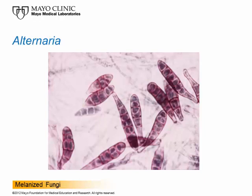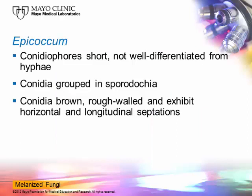Alternaria is a very common organism to see in the clinical laboratory and most of you can recognize it by sight. But you'll encounter some isolates that are a real challenge because they don't look quite the same. Epicoccum is another organism you may or may not be familiar with. It produces conidiophores that are short and not well differentiated from the hyphae, and the conidia are grouped together.